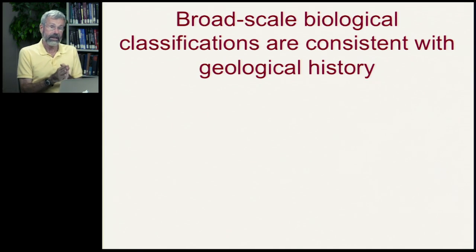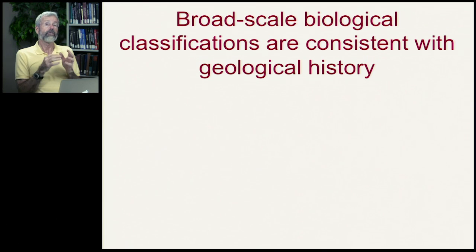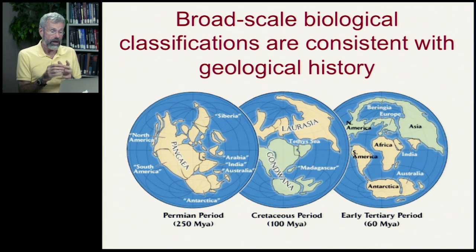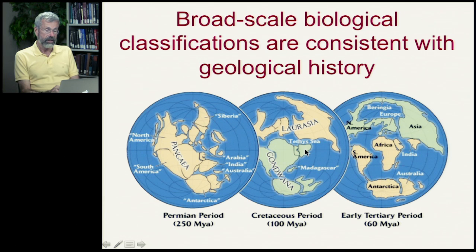When we make these classifications using all available material — including all the genetics coding for all the proteins in the bodies of living things — we find that broad-scale biological classifications are fully consistent with our understanding of the geological history of the Earth. One surprising thing is that 250 million years ago all the continents were connected in a vast land mass called Pangaea. South America was connected to Africa, North America, Antarctica, and Australia. By 100 million years ago there was some separation, but a large land mass of Africa and South America — Gondwana — remained. It was only in the last 60 million years that the modern continents fully separated.